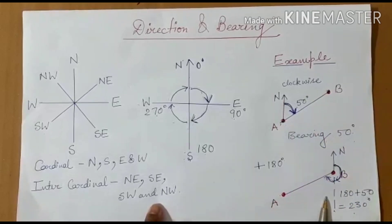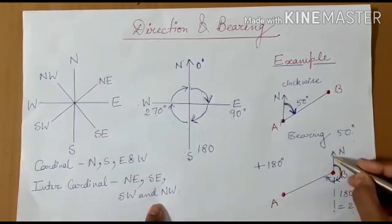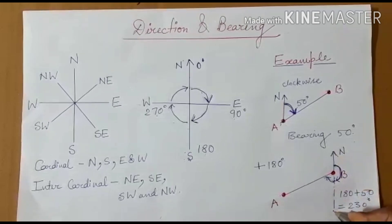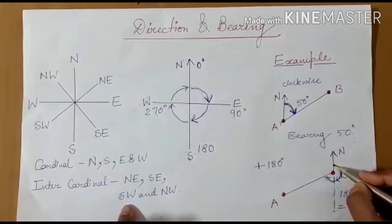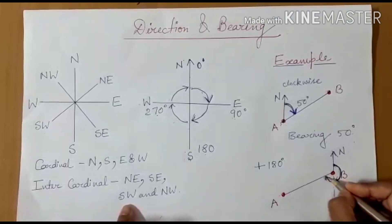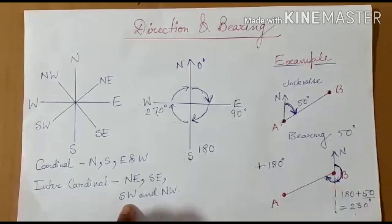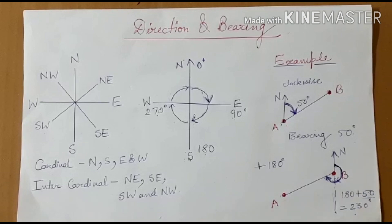Next, we measure the bearing of A from B. We draw the north line along B and extend it to make finding the angle easier. Since it is a straight line, that gives us 180 degrees. Measuring the remaining angle gives 50 degrees. So 180 plus 50 gives us 230 degrees — the bearing of station A from B is 230 degrees.